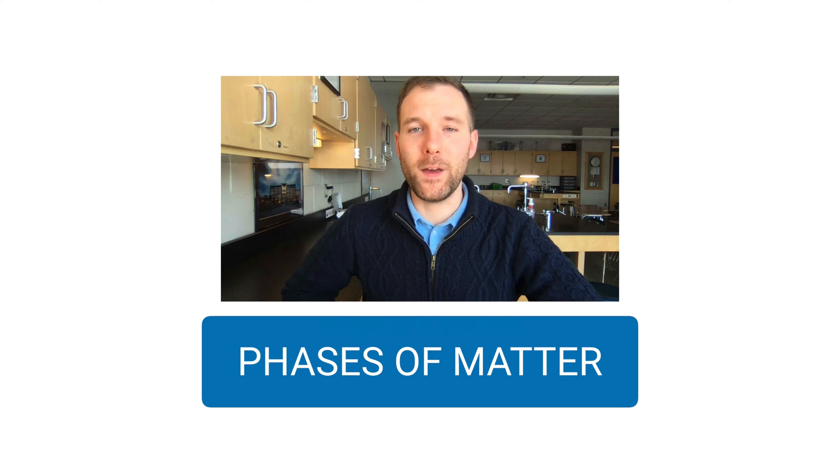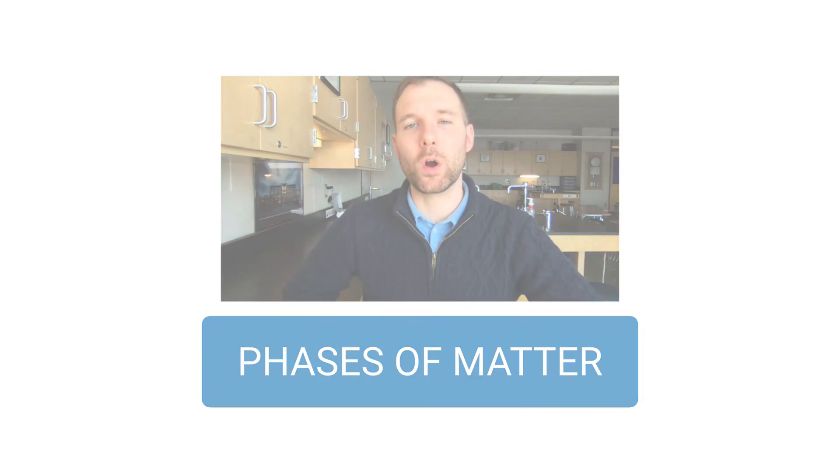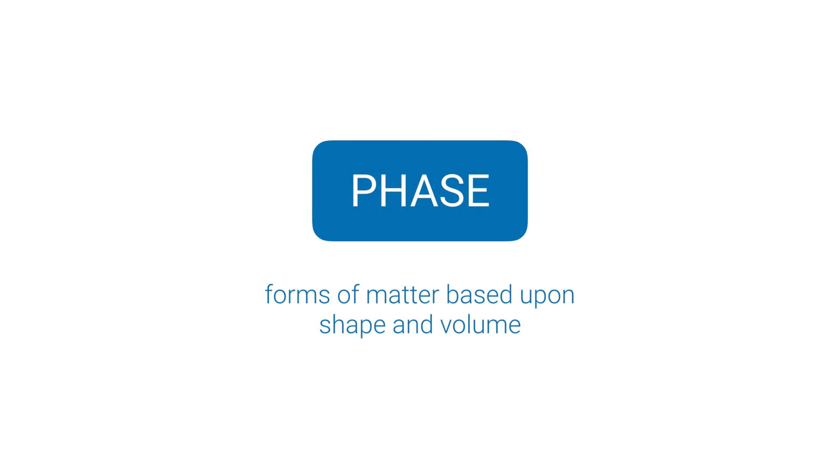Hi, in this video we're covering the phases of matter. So let's start with what is a phase. Sometimes this is called a state, and they're interchangeable. A phase of matter is a form of matter that's based upon its shape and its volume. And there are four common phases of matter: solid, liquid, gas are the three most common.